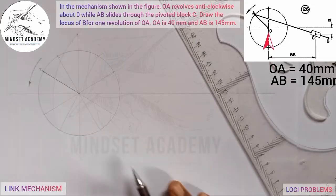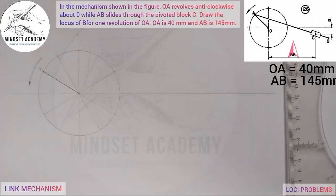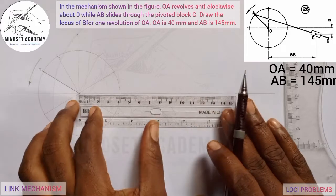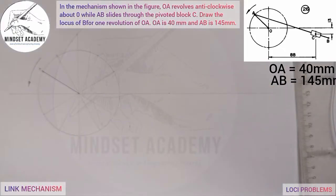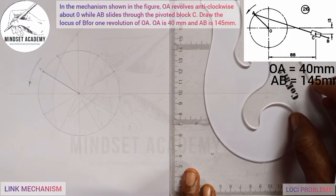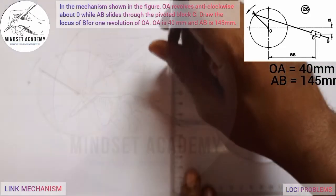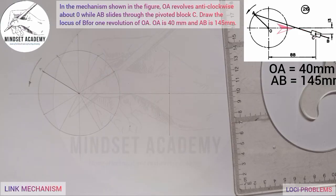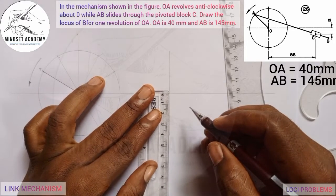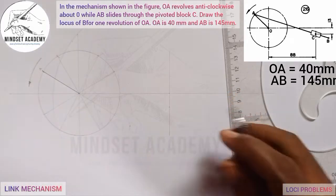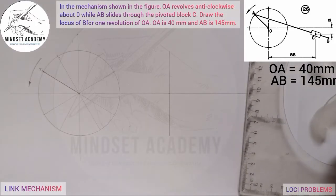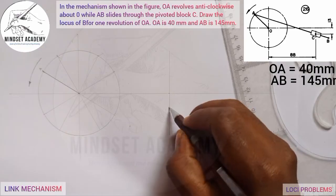We are also told that the distance from the center of the circle to where the pivot C is located is 88 millimeters. Measure 88 millimeters from the center — this is 80 and this is 88 here. At that point, draw a faint vertical line, then measure 13 millimeters from that line. At that point, draw the pivot — we'll call it point C.